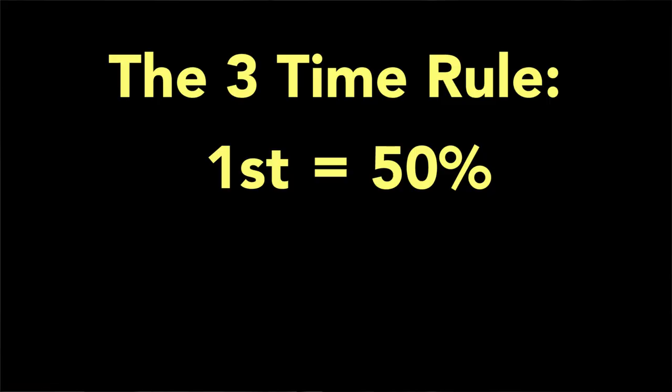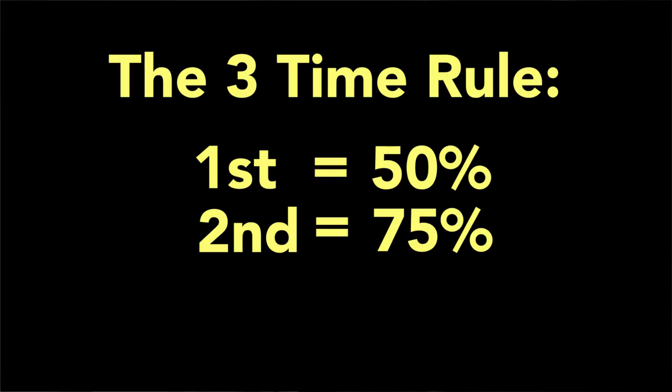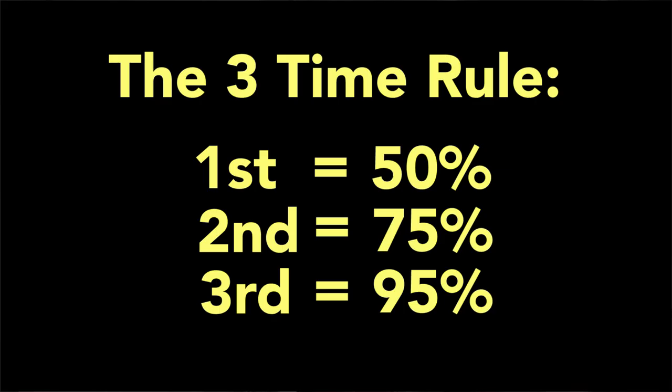He told us — and we've used this and seen results from it — that when you say things to people, especially to a big group when it's just you facilitating, the first time you say something about 50% of the people were probably listening or even understood. Two times, about 75% probably heard you. If you say the important thing three times, that's when you're going to get everyone and everyone's going to acknowledge it. Obviously don't repeat exactly the same words — use a variety of different ways of saying it — but this is going to help hugely when you're facilitating.